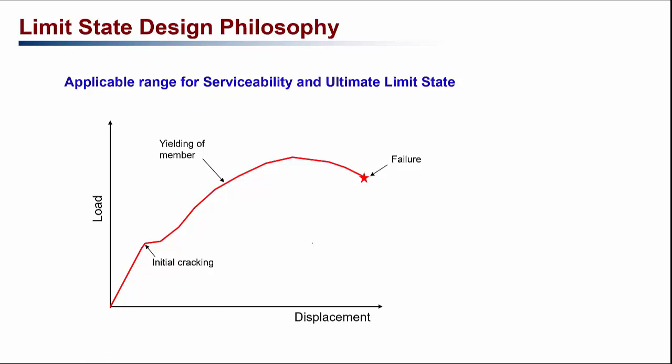Looking at the load-displacement curve for a structure: when subjected to a load, it initially behaves elastically. At a certain point, the structure might crack and start to behave non-linearly. Eventually it will yield and reach its ultimate capacity, then fail. The ultimate limit state corresponds to this failure region on the curve. If the structure exceeds the ultimate limit state, the structure will fail.